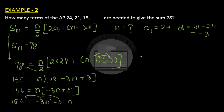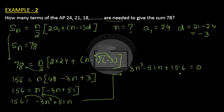Moving all terms to the left-hand side: 3n² − 51n + 156 = 0. This is a quadratic in n. Taking 3 as a common factor gives n² − 17n + 52 = 0.